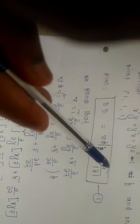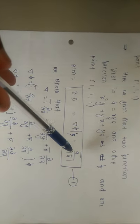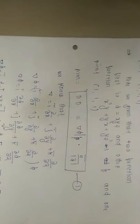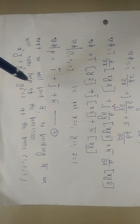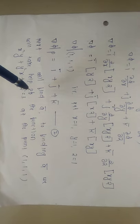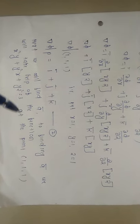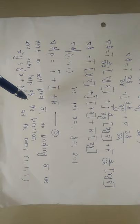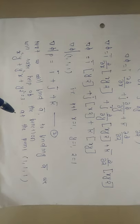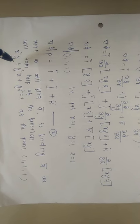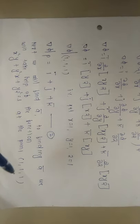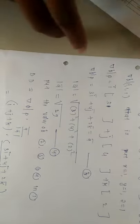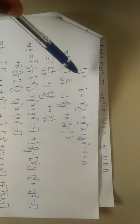Next we need to find ā and |ā|. In the previous example the value of ā was already given in the form of i, j, k, but here we have to find ā. The given surface function is x²y + y²x + yz² = 3 at the point (1,1,1), and this is called f.